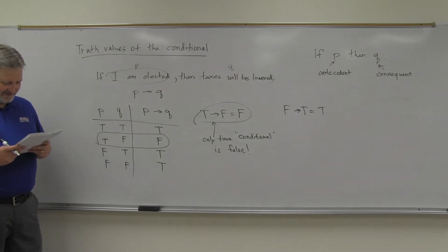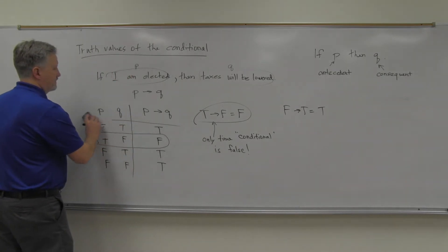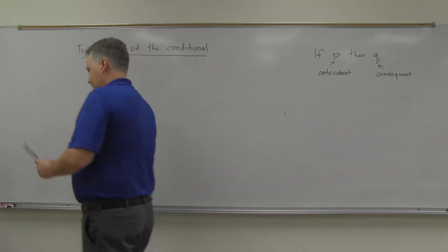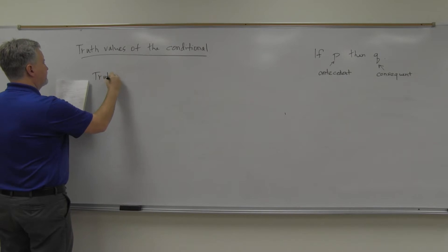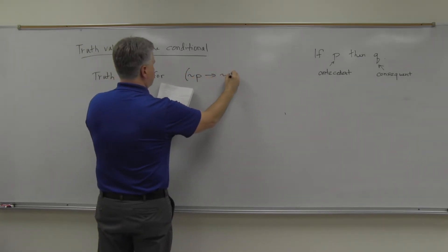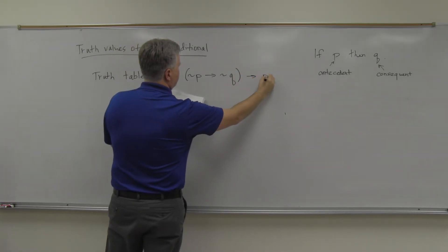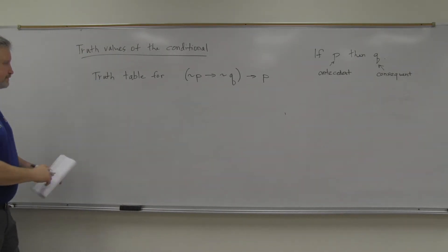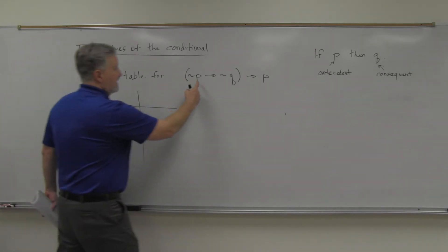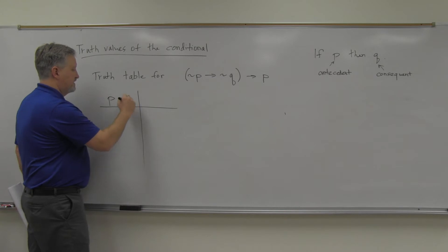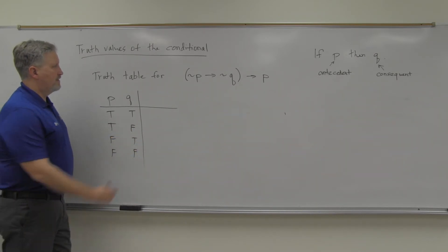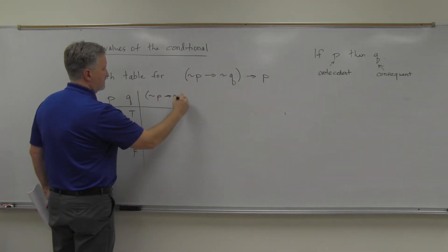Let's practice with a truth table for: (not P arrow not Q) arrow P. How many lines do I need? I've got P and Q, no R, so that's four lines: true/true, true/false, false/true, false/false. Then the columns are: not P, not Q, and then P. Not P is the opposite of P — so false, false, true, true. Not Q: false, true, false, true. And P is just a copy of the P column: true, true, false, false.